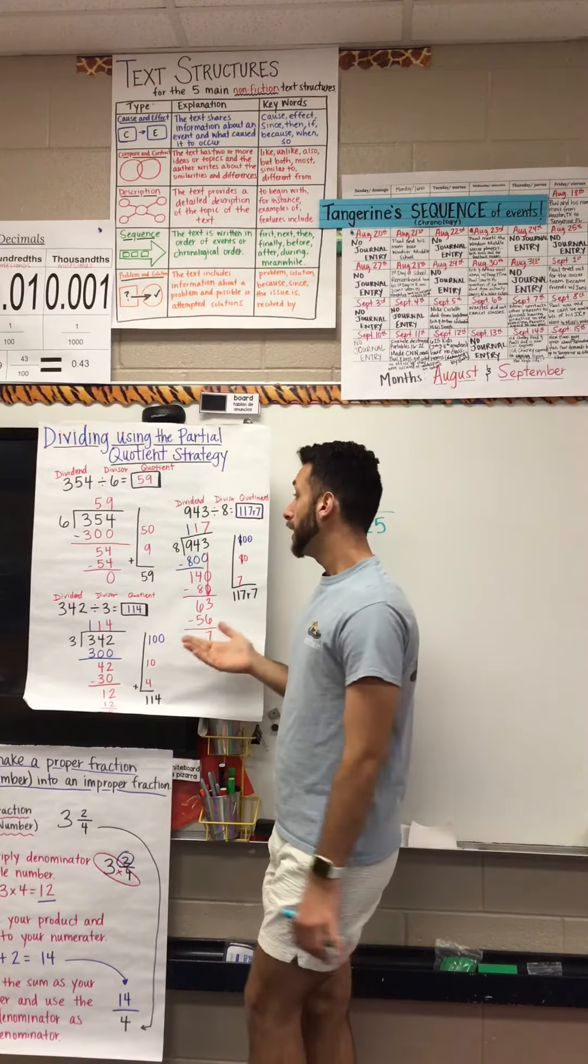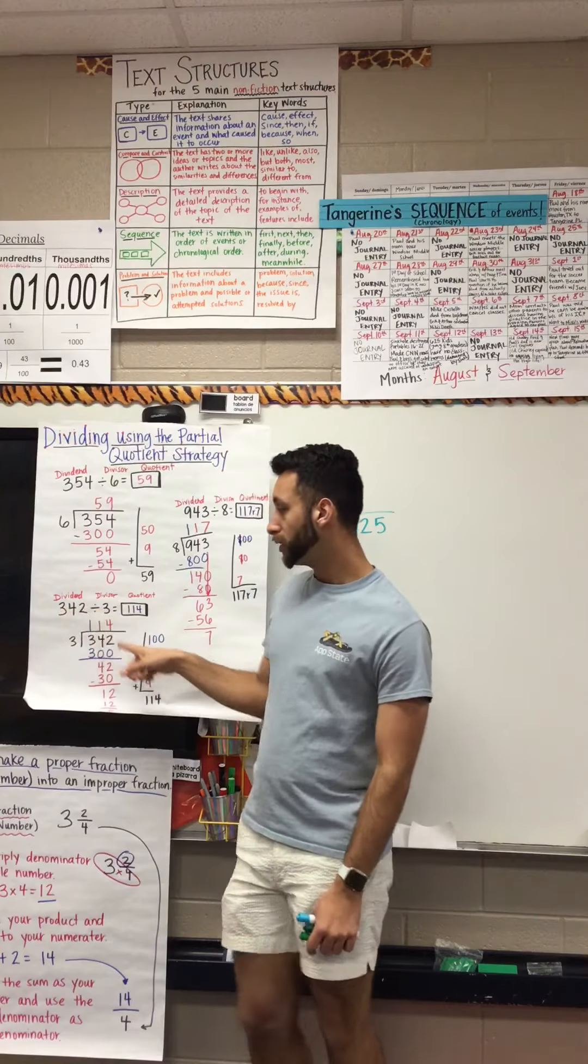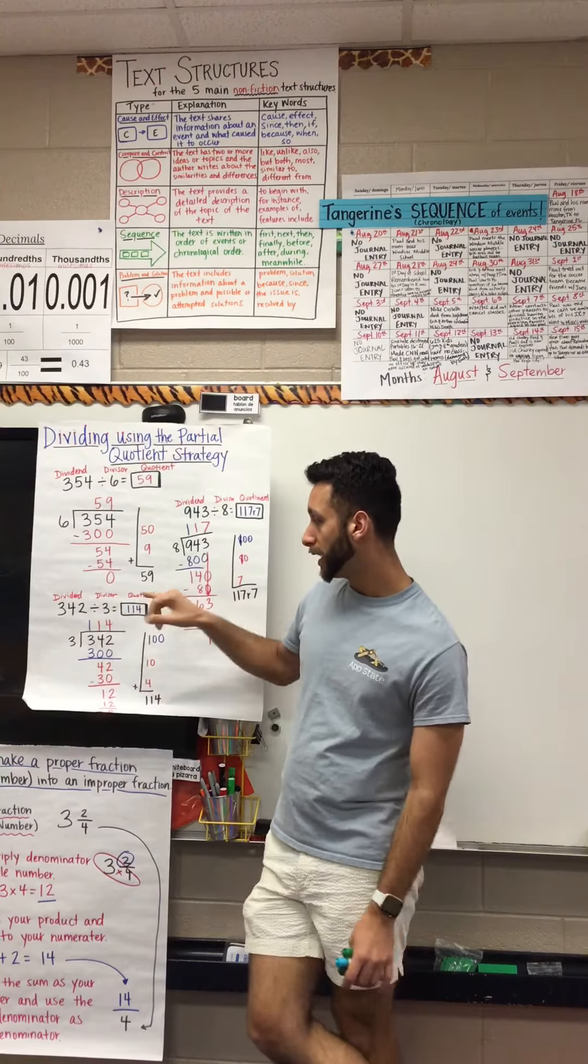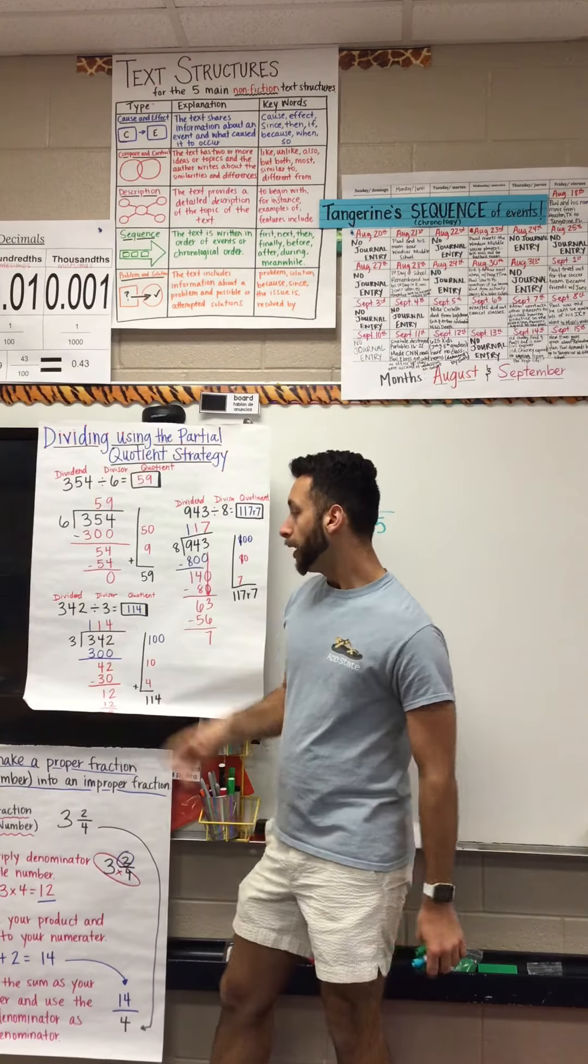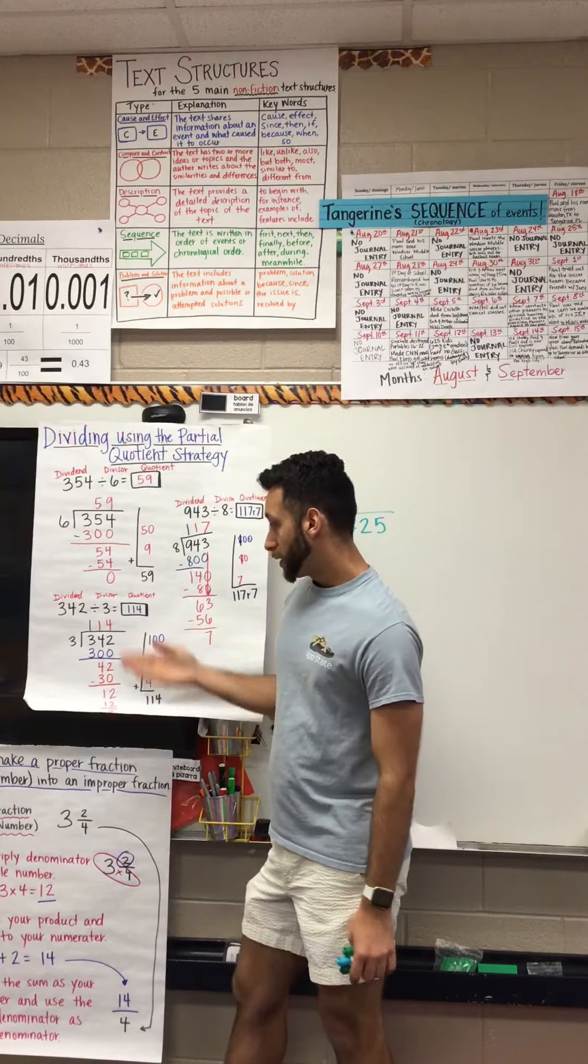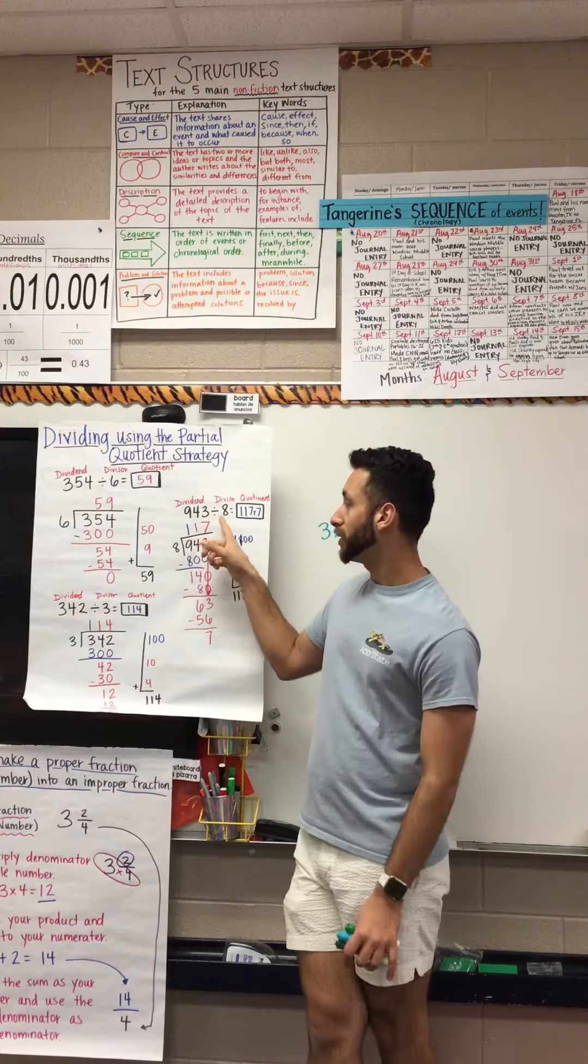Now for example, with this one right here, 342, your dividend, your divisor 3, and your quotient. We're trying to figure that out, which is already written here for you. This one does not have a remainder either, but this one over here does. It has 943 divided by 8 equals 117 remainder 7.